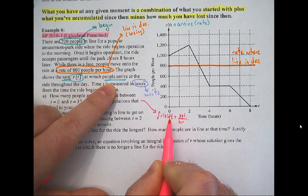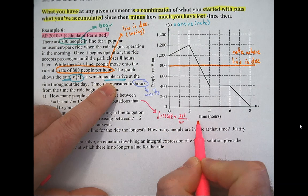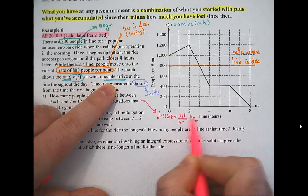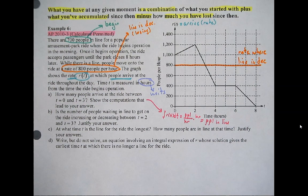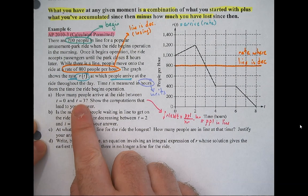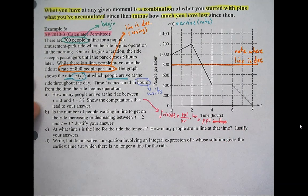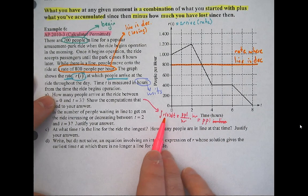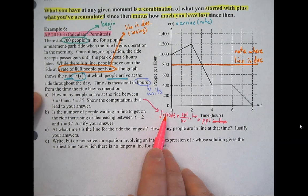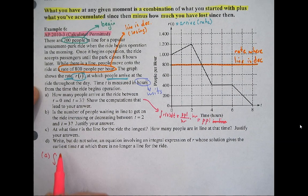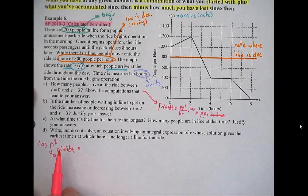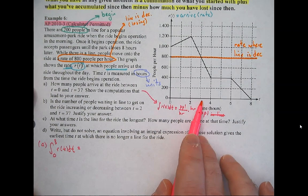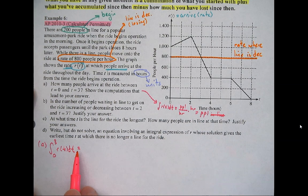So the integral from t=0 to t=3 of r(t) dt tells me how many people have arrived between t=0 and t=3. We don't have a function to type in directly, even though this is calculator-permitted, so we have to use the graph. I'll encourage you to pause and try to figure out what that integral from 0 to 3 would be.